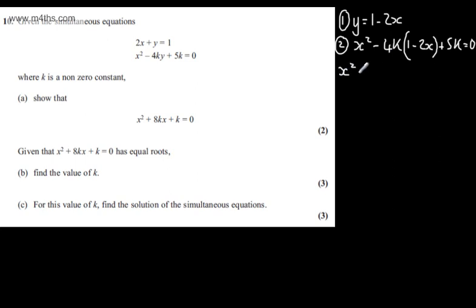Expanding the brackets, we'll have x squared minus 4k then we'll have plus 8kx plus the 5k and that's equal to 0. 5k minus 4k is 1k so we can say x squared plus 8kx plus k is equal to 0 as required.